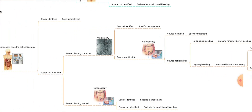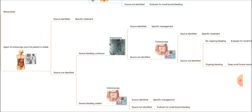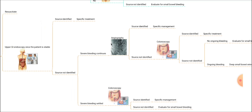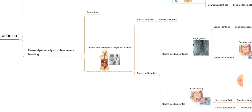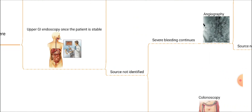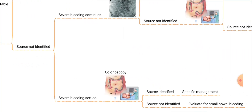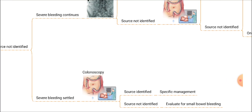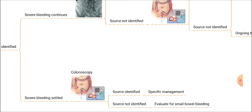Consider also the scenario where the patient initially presented hemodynamically unstable and we performed upper GI endoscopy but the source was not identified — however, the bleeding has now settled. At that stage we can proceed with colonoscopy. If any source is identified in the colonoscopy, we can do specific management; if no source is identified, we can evaluate for small bowel bleeding.